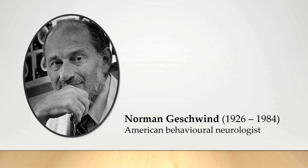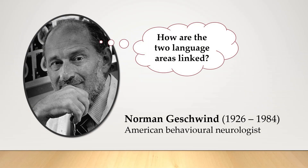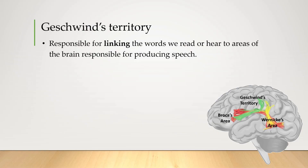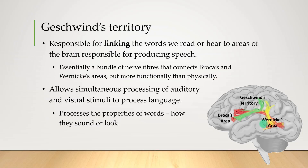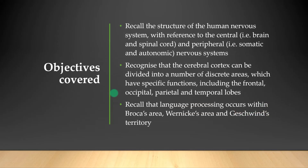More recently, a third area important for language has been identified. British scientists discovered that the inferior parietal lobe provides a connection between Broca's area and Wernicke's area via a bundle of nerve fibers. They named this area Geschwind's territory, after the famous American neurologist who theorized such a connection might exist. We can think of Geschwind's territory as doing a lot of linking — connecting words we read or hear to areas responsible for producing speech. More functionally, it allows simultaneous processing of auditory and visual stimuli because it contains multimodal neurons, helping us process how words look and sound, and making meaning of language overall.